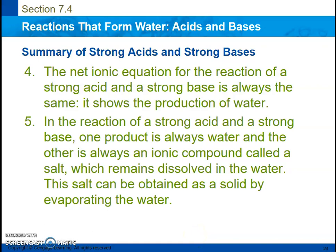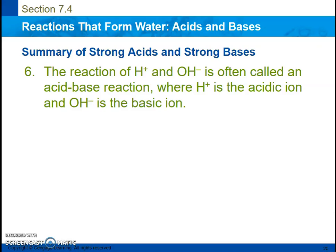If you evaporate that water away, you can obtain the salt that is created — that is how salt is mined. Out in Utah near the Great Salt Lake, the Morton Salt Company pumps water out of the Great Salt Lake, lets it dry in an evaporation pond, and once all the water evaporates away, they dig it all up and purify it a little bit and then put it in those little brown containers that we buy at the store. The reaction of a hydrogen ion and a hydroxide ion is often called an acid-base reaction, where the hydrogen ion is the acidic ion and the hydroxide is the basic ion.